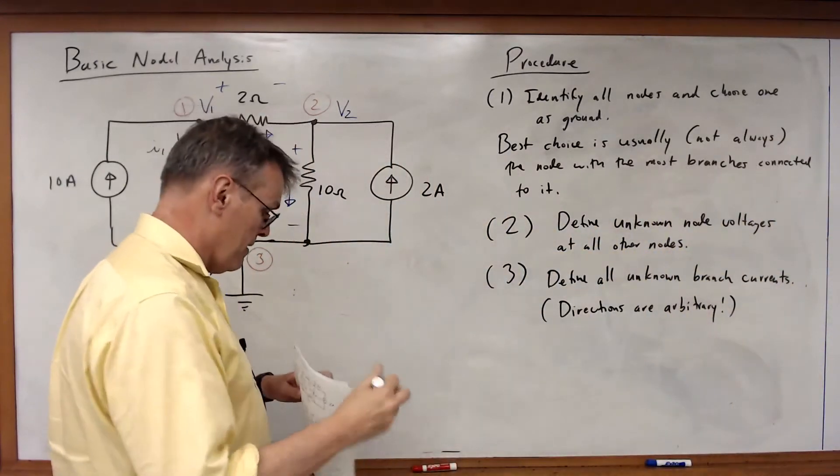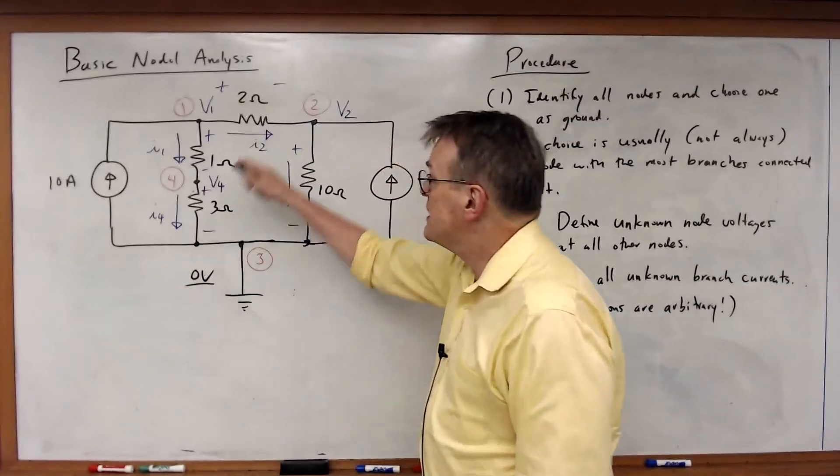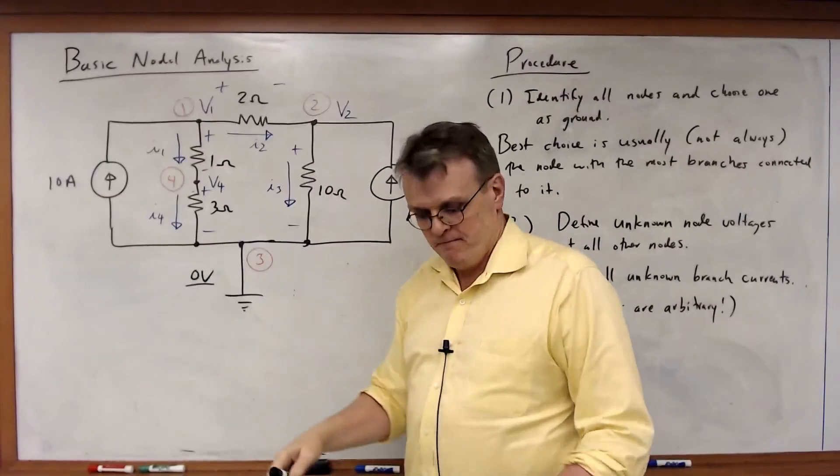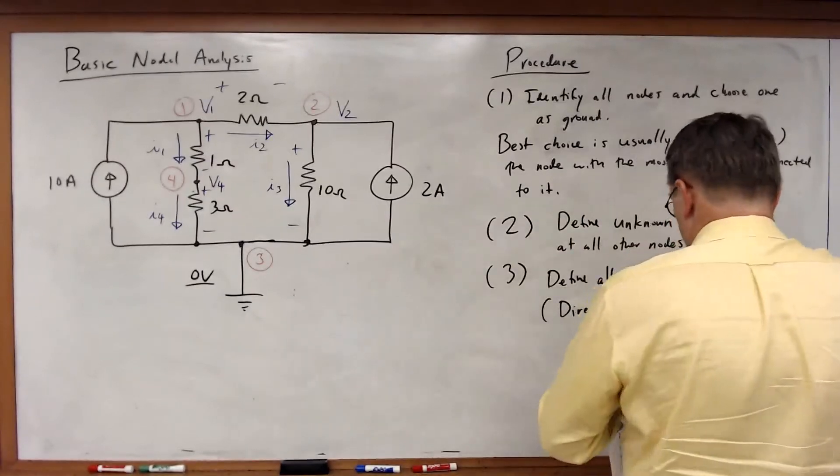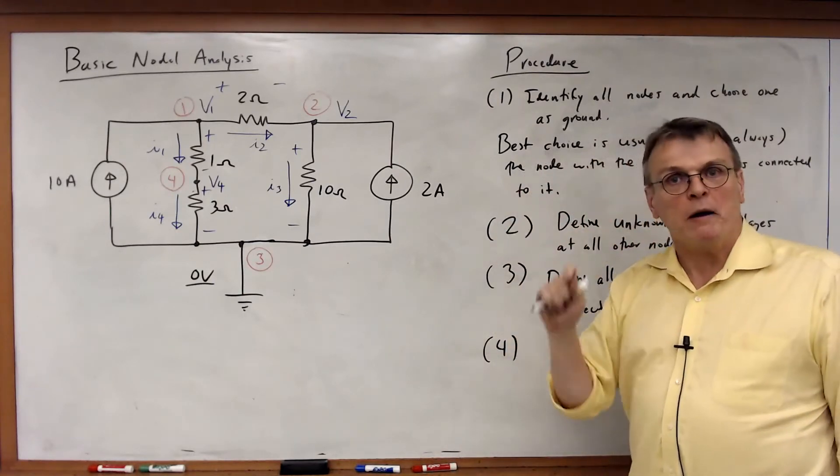Next step. Let's write a KCL equation for all of the unknown nodes. So we're going to write a KCL equation for every node except ground.